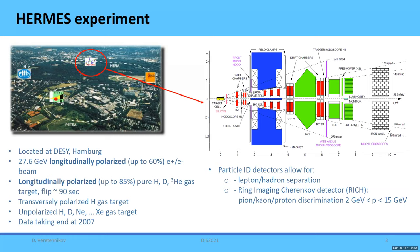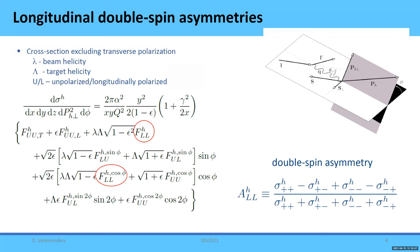The first result is the A_{LU}^{\sin\phi} double spin asymmetry. From this slide one can see the cross section for SIDIS when we exclude transverse polarization. The structure functions F_{UU} etc. are what we are going to measure, but instead of directly measuring them, we measure an asymmetry, which is basically a ratio of cross-sections for different combinations of beam and target spins. This is done because measuring asymmetries allows us to exclude many systematic uncertainties.